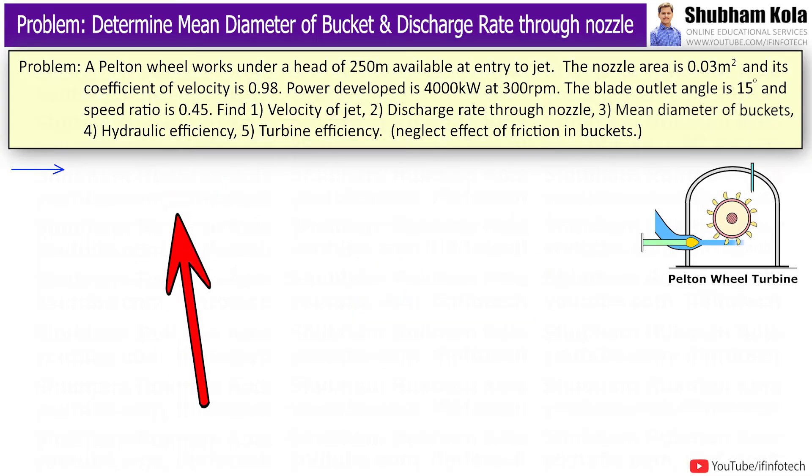So here statement is, a Pelton wheel works under net head of 250 meter available at entry to jet. The nozzle area is 0.03 m² and its coefficient of velocity is 0.98. Power developed is 4000 kW at 300 rpm. The blade outlet angle is 15 degree and speed ratio is 0.45.